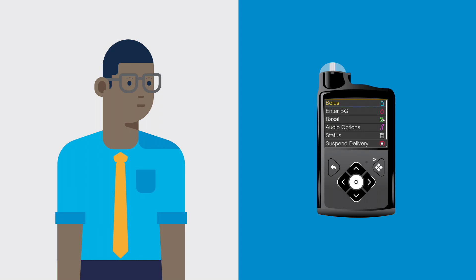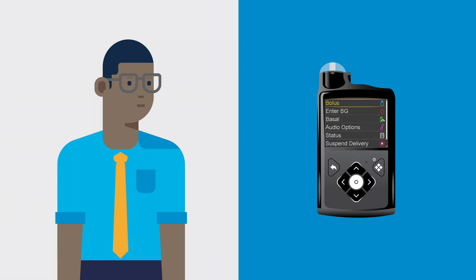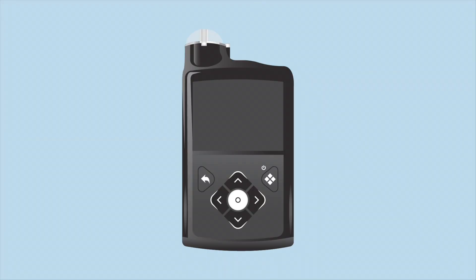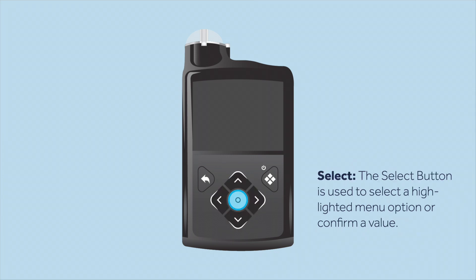The pump displays information on a screen and can be controlled by the buttons on the front. Nick explains each button performs a specific function. Use the arrows to scroll through a menu or to change a value on the screen. The select button is used to choose a highlighted menu option or confirm a value.